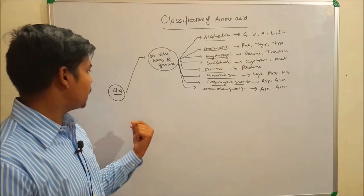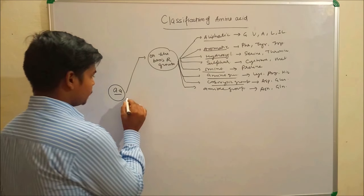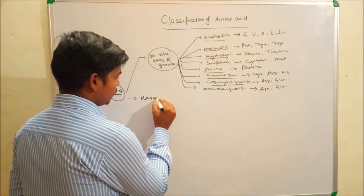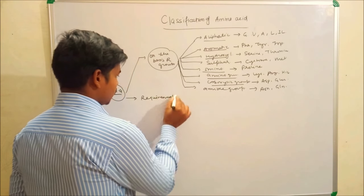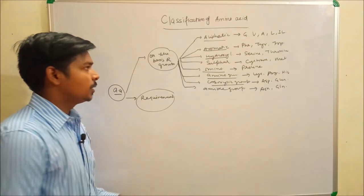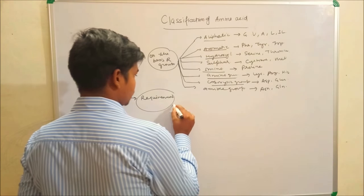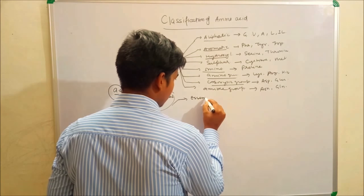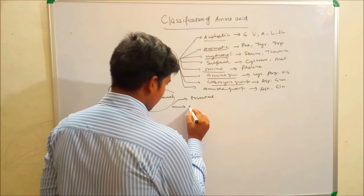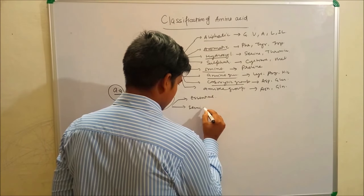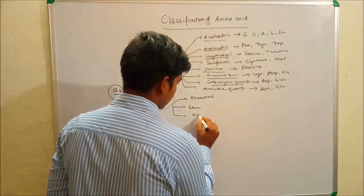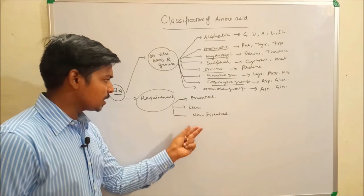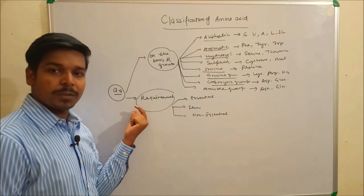When we classify amino acids on the basis of requirement, they are divided into three parts: the first is essential, the second is semi-essential, and the third is non-essential.